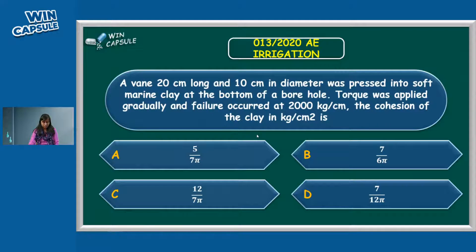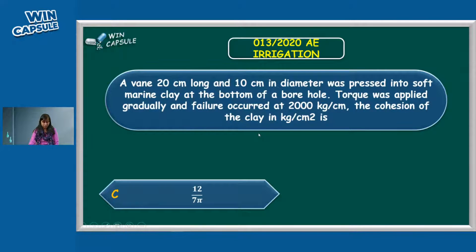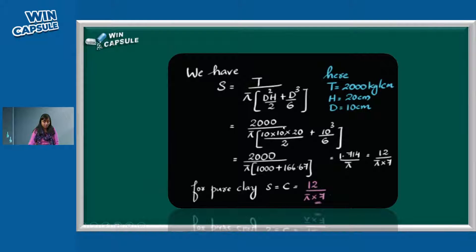Let's check the answer. The correct answer is option C. We apply the torque of 2000 kg per centimeter. We have to do the vane shear test. The height of the vane is 20cm and the diameter is 10cm. We are going to use the vane shear test result for shear strength. The shear strength equation is: T = π × D² × (H/2 + D/6).